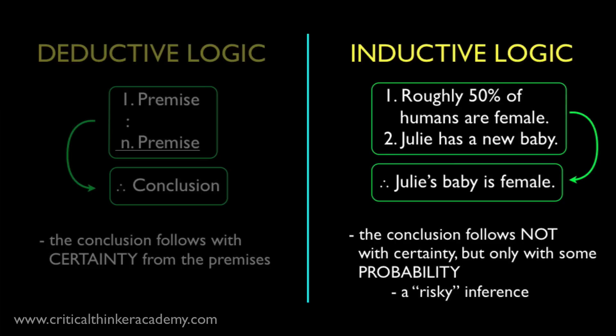On the other hand, an argument like this is not strong. Roughly 50% of humans are female. Julie has a new baby. Therefore, Julie's baby is female. In this case, the odds of the conclusion being correct are only about 50%, no better than a coin toss. Simply knowing that a baby is human doesn't give us good reasons to infer that the baby is a girl. The logical connection is too weak to justify this inference.